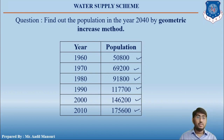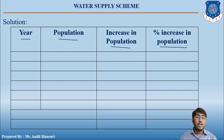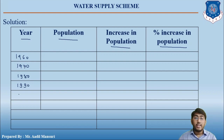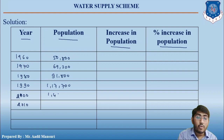In the solution, you have to make a table. The first column is the year, second is population, third is increase in population, and fourth is percentage increase. The years are 1960, 1970, 1980, 1990, 2000, and 2010 with respective population values: 50,800; 69,200; 91,800; 1,17,700; 1,46,200; and 1,75,600.